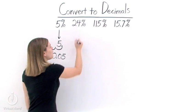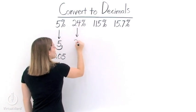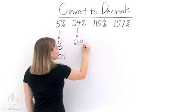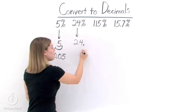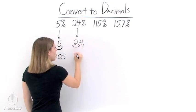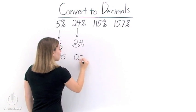Let's do the next one, 24%. We drop the percent sign and we just have 24. Now, our decimal point is right here. We move it two places to the left, and we get the decimal 0.24.